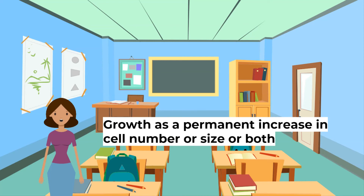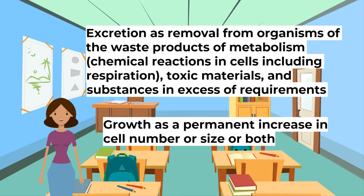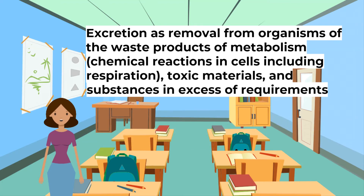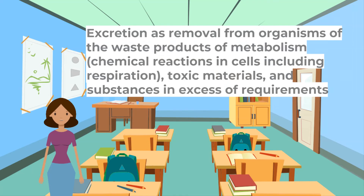Growth is a permanent increase in cell number or size or both. Excretion is the removal from organisms of the waste products of metabolism — chemical reactions in cells including respiration — toxic materials and substances in excess of requirements.